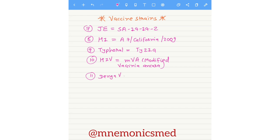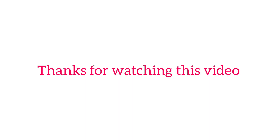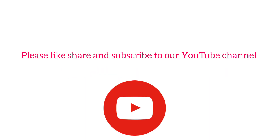Now we are learning about the dengue vaccine — Dengvaxia. Its strain is CYD-TDV, so you have to remember that. For anthrax, the vaccine strain is Sterne. Thanks for watching this video. If you love our work, please like and subscribe to our YouTube channel.